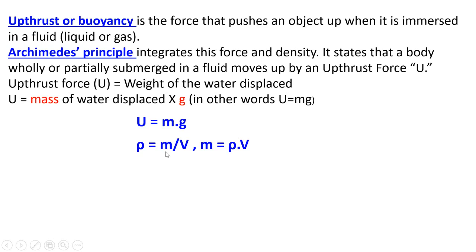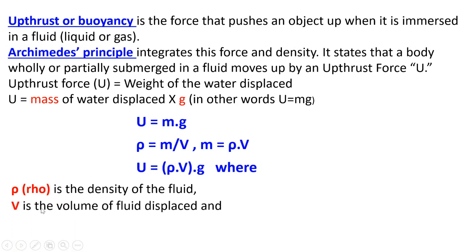Density is mass over volume. In terms of mass, it is density times volume. Density times volume times g. And that's the formula for upthrust force, where ρ is the density of the fluid, V is the volume of the fluid displaced, and g is the acceleration of gravity.